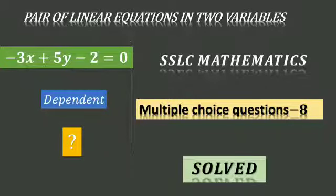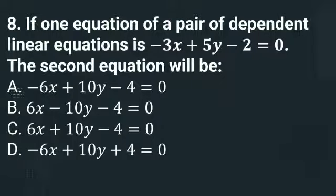In this video, let us solve the 8th multiple choice question. The question is: if one equation of a pair of dependent linear equations is -3x + 5y - 2 = 0, the second equation will be: